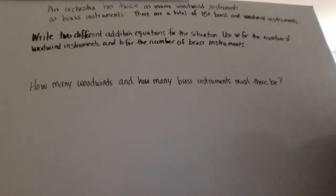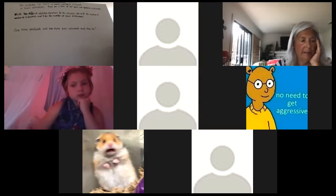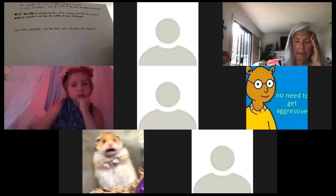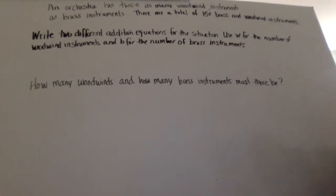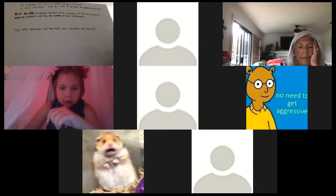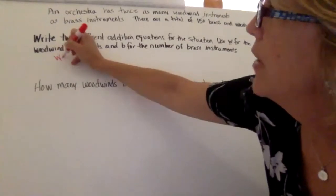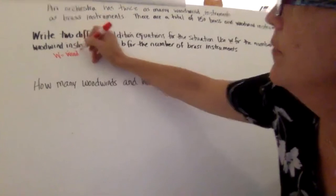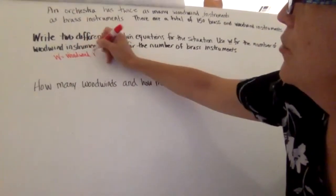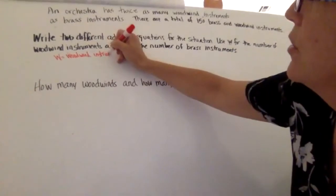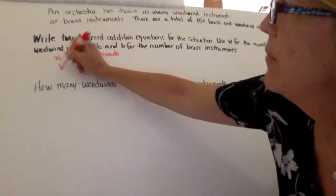Here's a word problem we're working on today. An orchestra has twice as many woodwind instruments as brass instruments. There are a total of 150 brass and woodwind instruments. The problem asks us to write two different addition equations using w for the number of woodwind instruments and b for the number of brass instruments. We call this defining our variables: w is woodwind instruments.